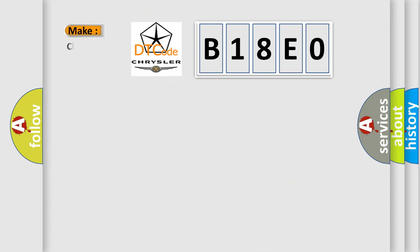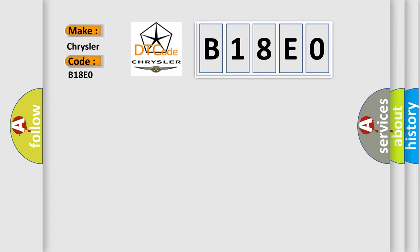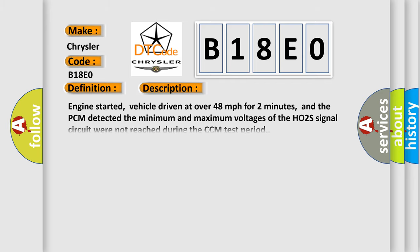What does the diagnostic trouble code B1800 interpret specifically for Chrysler car manufacturers? The basic definition is: HO2S11 Bank 1 Sensor 1 Lean Shift Monitoring Bank 1. Engine started, vehicle driven at over 48 mph for 2 minutes, and the PCM detected the minimum and maximum voltages of the HO2S signal circuit were not reached during the CCM test period.